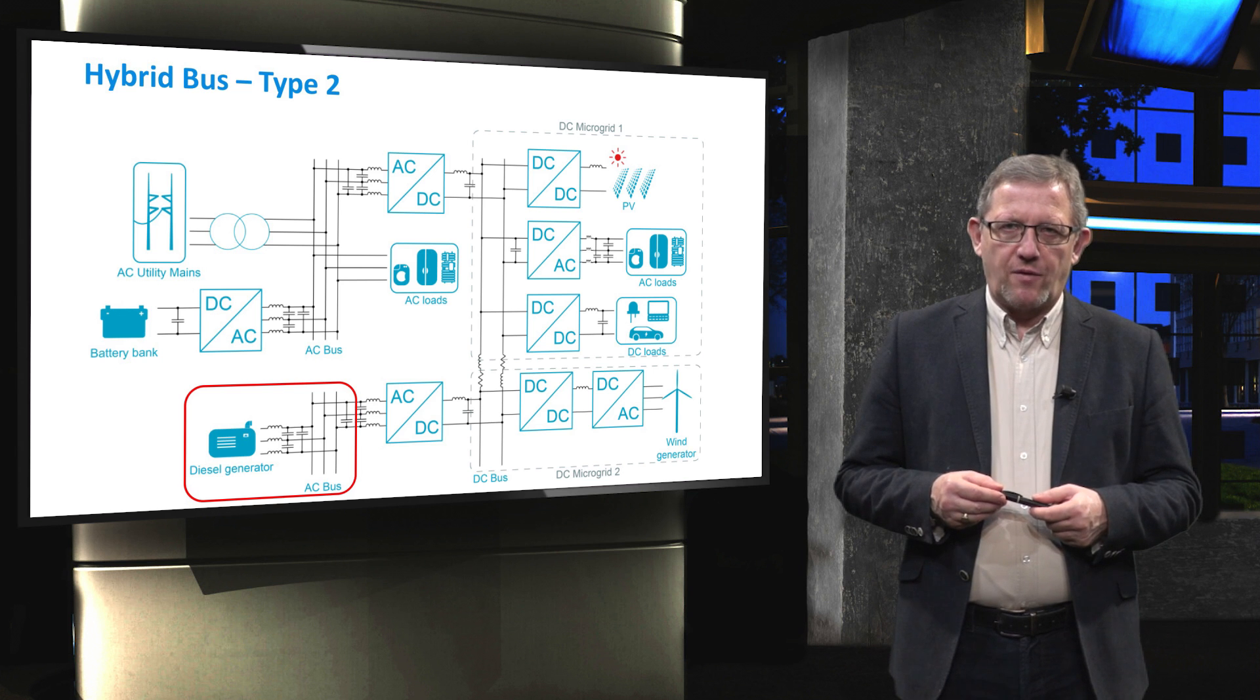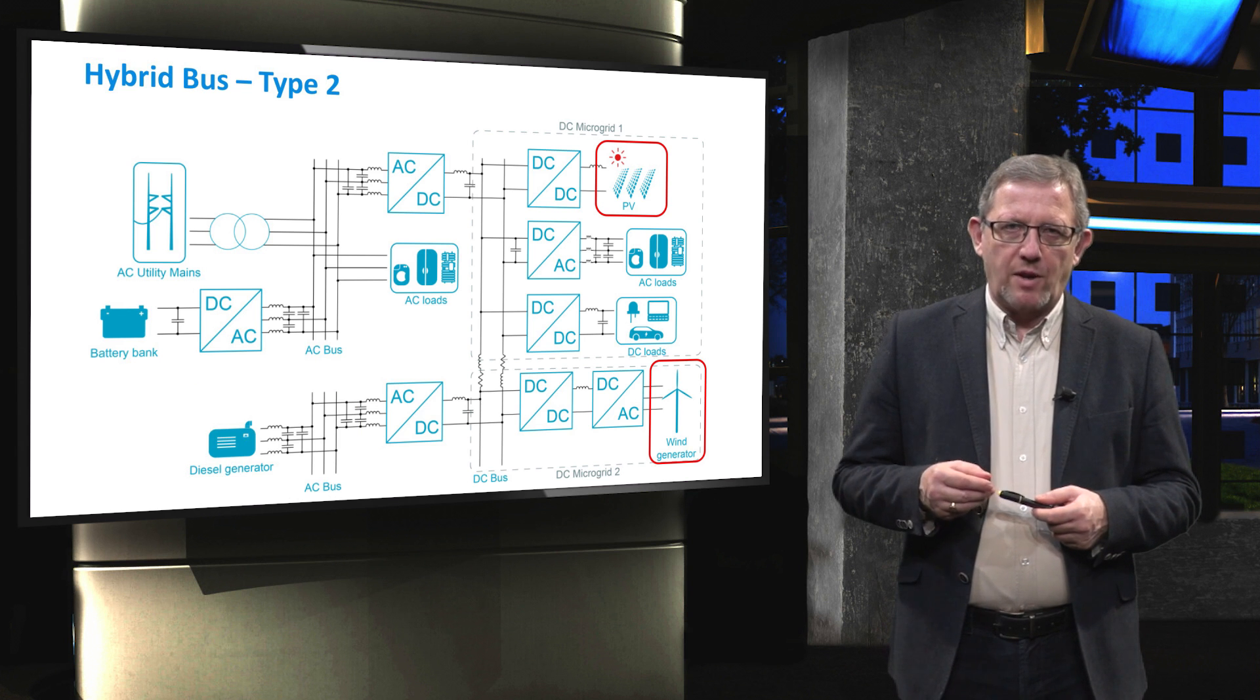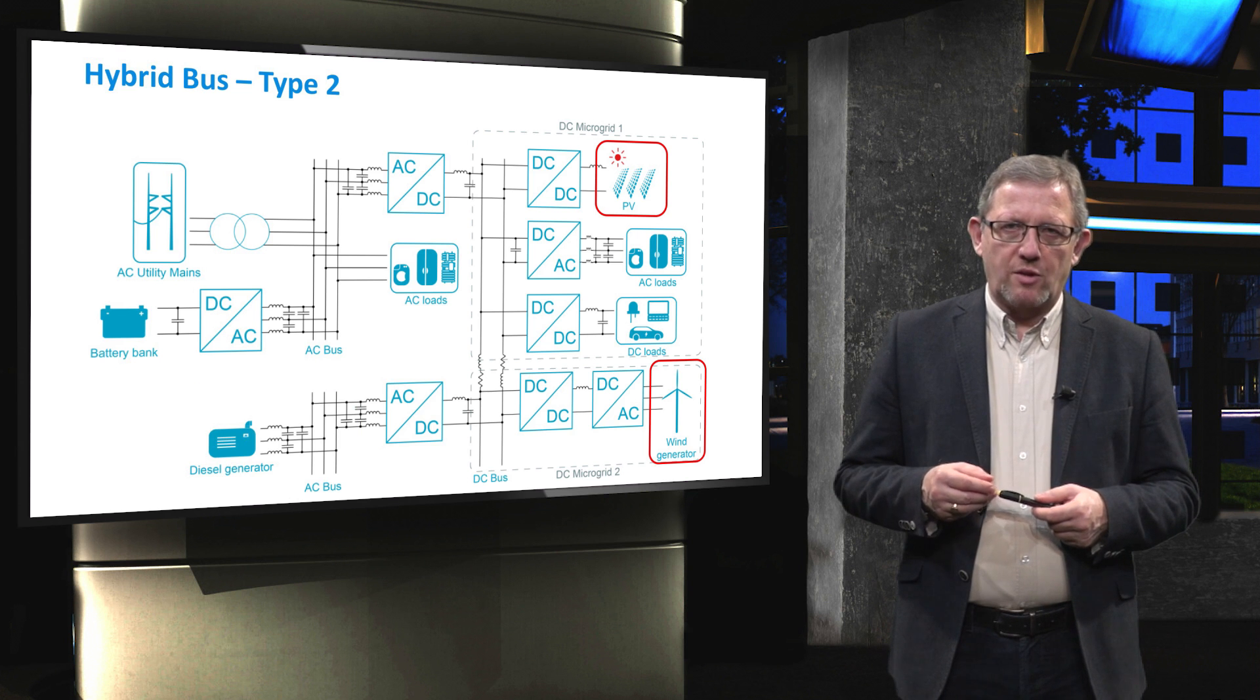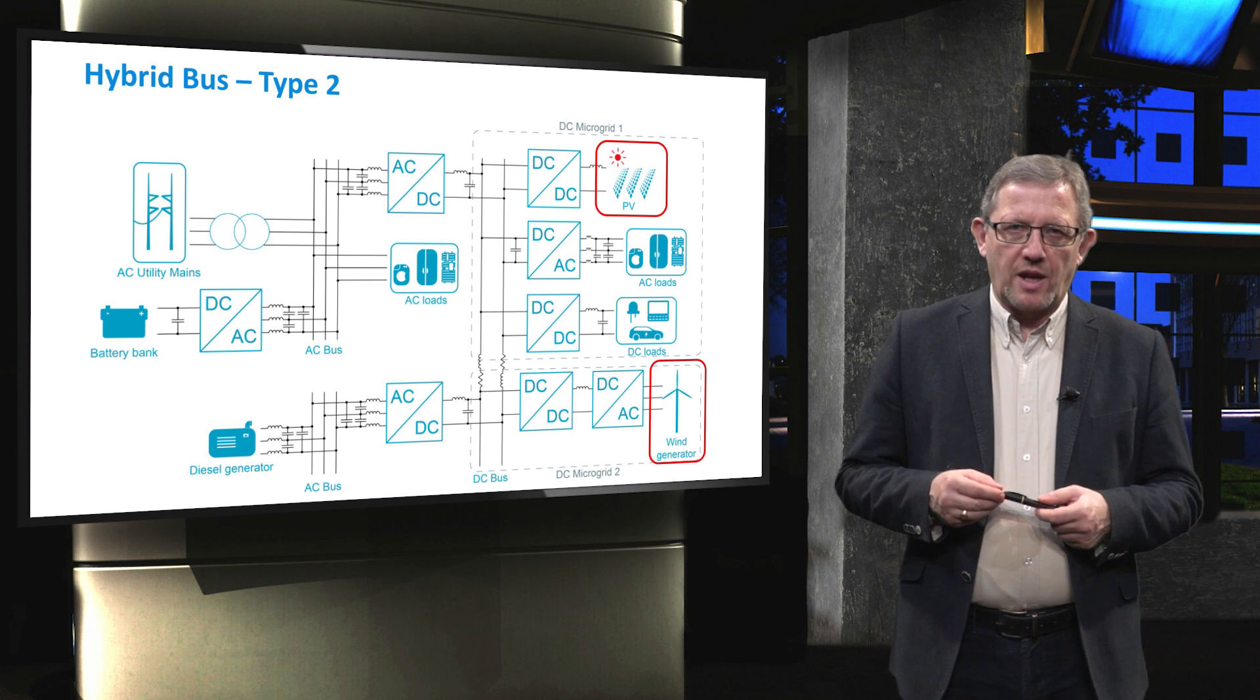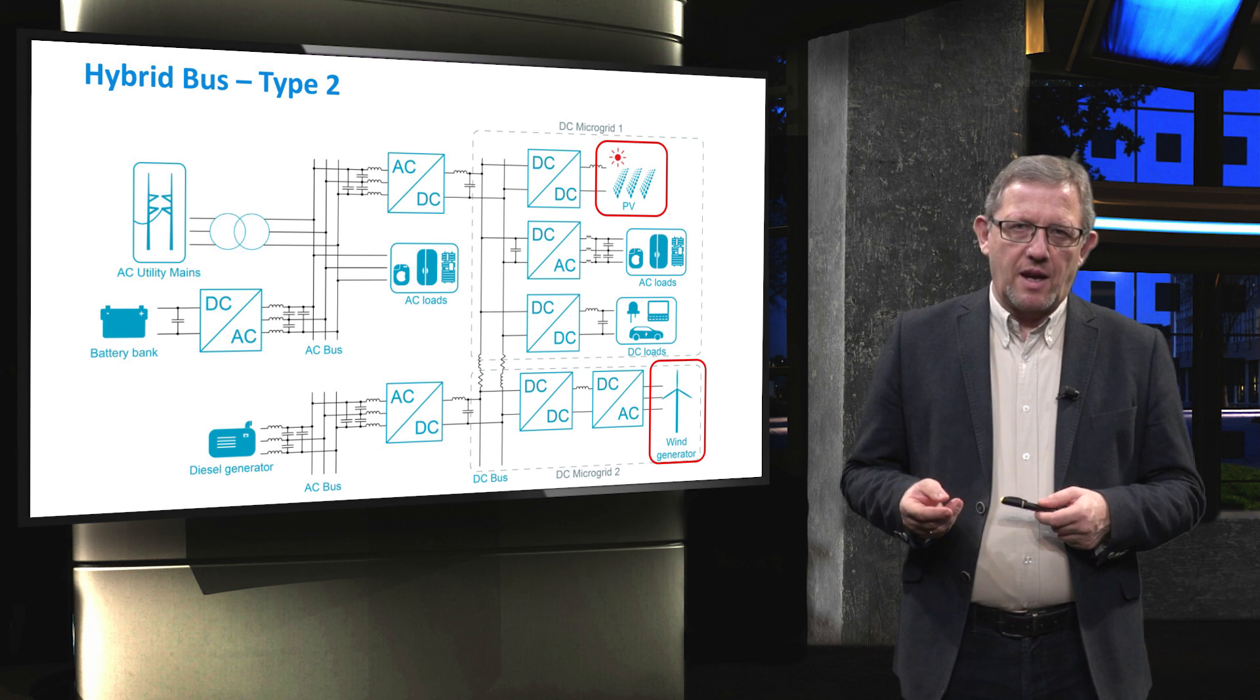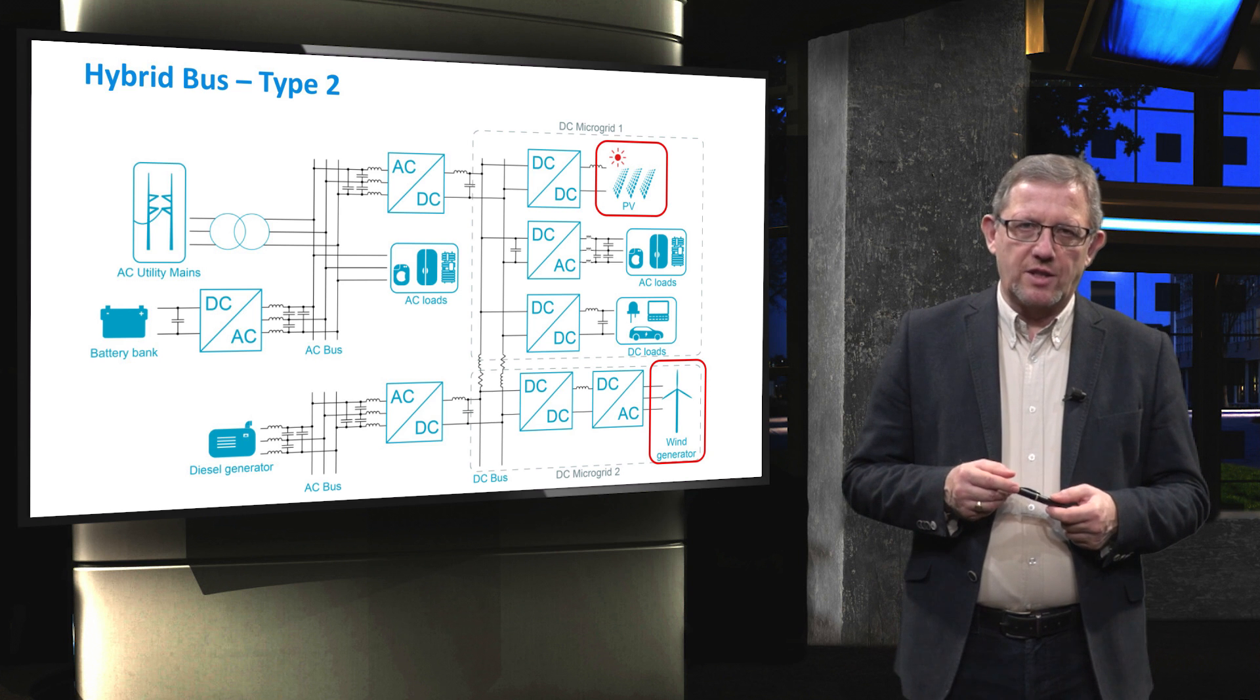The power generated by the diesel generator can effectively mitigate the intermittencies associated with wind and photovoltaic solar at the DC bus and can be exclusively and directly consumed by the loads connected to the DC bus. This might result in increased efficiency where particularly during high prices the power generated by diesel is not first stored in the battery and then sent to the DC bus, avoiding charging and discharging efficiency losses of the battery.